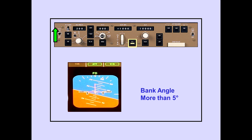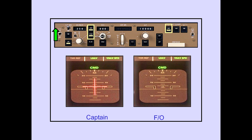The command bars display a turn to maintain the current bank. When a flight director is turned on and an autopilot is in command, the flight director operates in the same mode as the autopilot. When an autopilot is in command, that is displayed on the PFD.